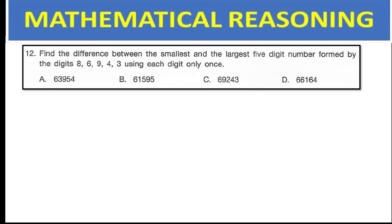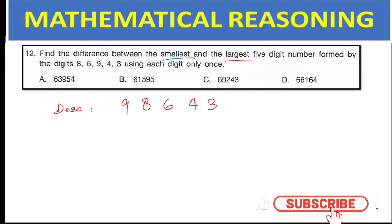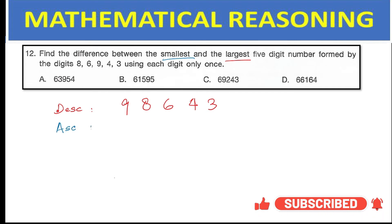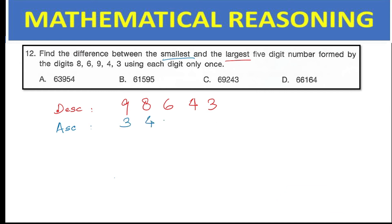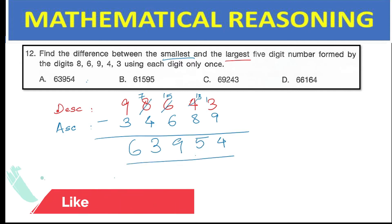Find the difference between the smallest and largest 5-digit number formed by the digits 8, 6, 9, 4, 3 using each digit only once. To find the largest number, arrange the digits in descending order: 9, 8, 6, 4, 3. To find the smallest, arrange them in ascending order: 3, 4, 6, 8, 9. Find the difference of these two numbers, which gives 63,954 — option A.